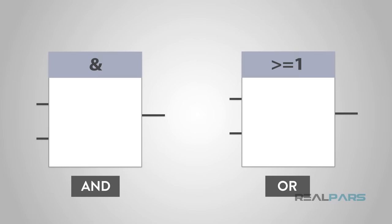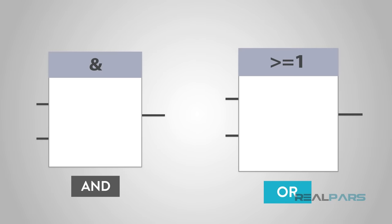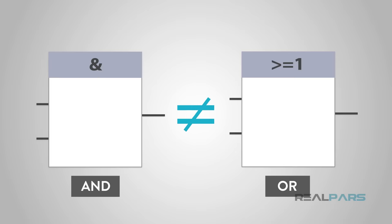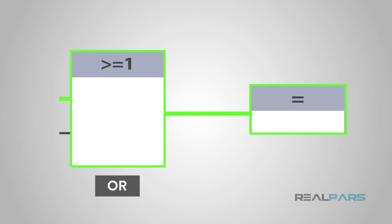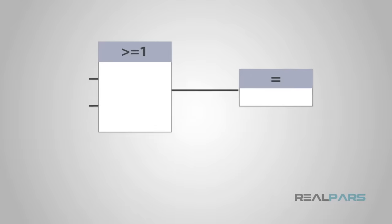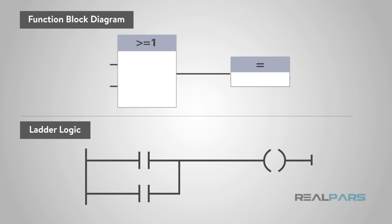Another common function used is the OR logic function block. This is like the opposite of AND logic. With an OR function block, you would energize this input OR that input to energize the output. In ladder logic, it would look like a parallel circuit like this.